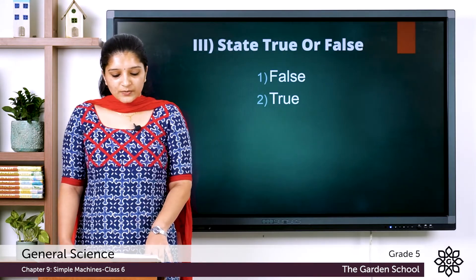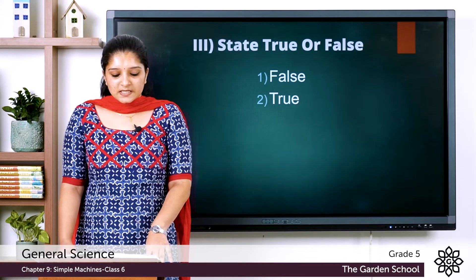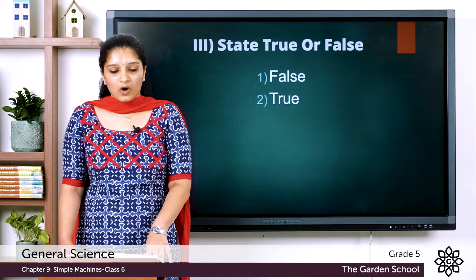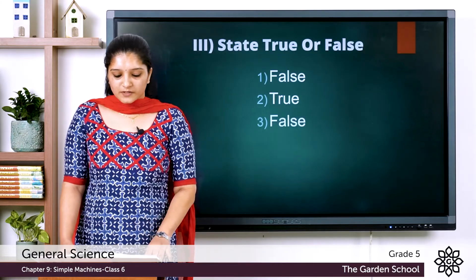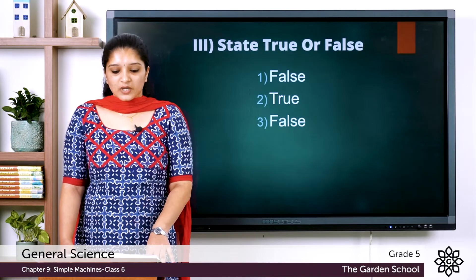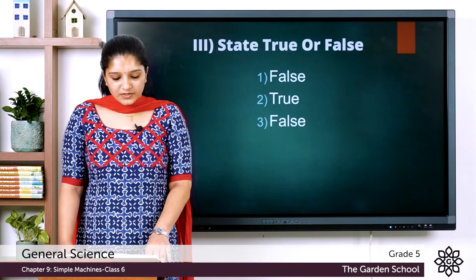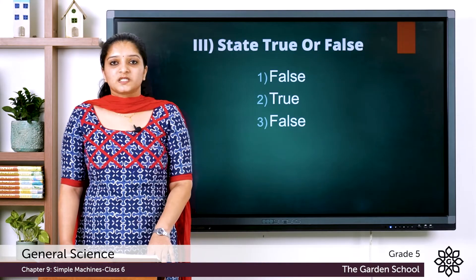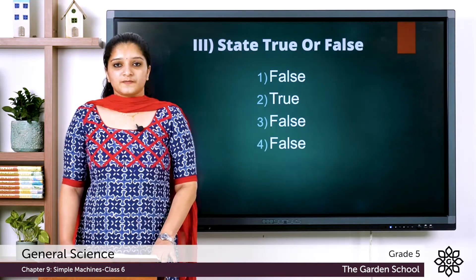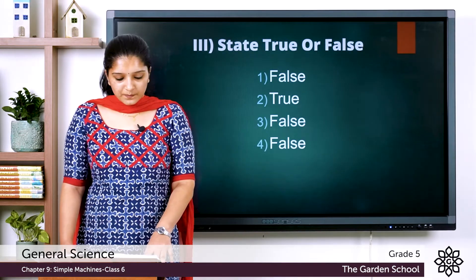The third statement: it is easier to climb a steep slope rather than a gradual one. The answer is false, because it is always easier to climb a gradual slope than a steep one. The fourth statement: a washing machine is a simple machine. The answer is false, because a washing machine is a complex machine.